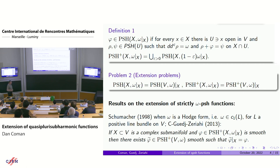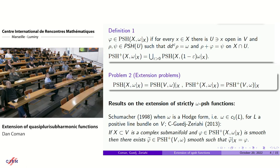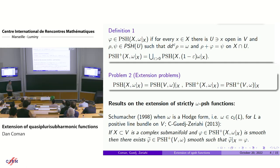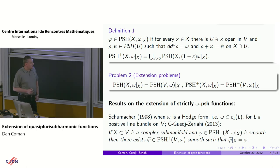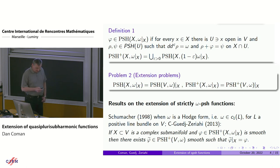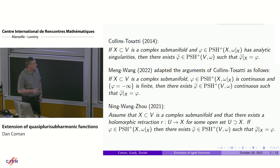When you have extra positivity, so in this plus class, the problem is a bit easier, as is known from the classical theorem of Richberg on approximation of strictly plurisubharmonic functions. I start by listing some results in that case. There is a result in the smooth case: if X is not an analytic subset but actually a smooth submanifold, and you start with a smooth strictly plurisubharmonic function on X, then it is possible to extend it to a smooth strictly plurisubharmonic function on V. One uses the square of the distance to X to extend locally, and then extends globally.